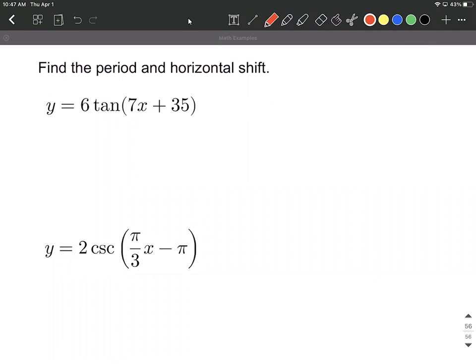So to get the period, first of all, on each one of these, what you want to do is start with the original period for the function. So in our case, we have a tangent, which has an original period of pi, and we're going to divide by this multiple attached to the x on the inside. So pi divided by 7 will be the period for our given function.